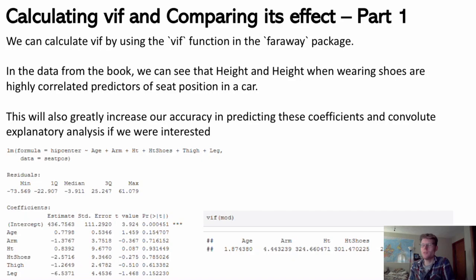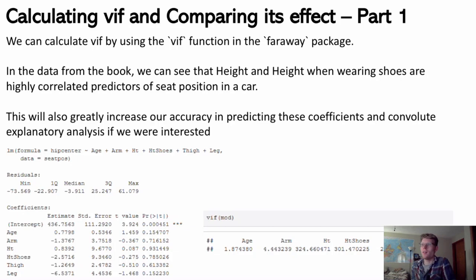To calculate VIF, there is a VIF function — just `vif(your_model)` — which produces the variance inflation factor for all predictors in the model. It's in the car package, so you'd need to library that first. To demonstrate how this works, I'll use the chapter 15 example of predicting someone's ideal seat position — how far they set their seat from the steering wheel — based on attributes of that person.